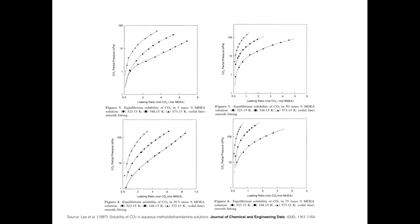These figures are taken from the article 'Solubility of Carbon Dioxide in Aqueous MDEA Solutions' from the Journal of Chemical Engineering Data. It shows four panels with three plots in each panel. The circle marker is at 323.15 K, the square marker at 348.15 K, and the triangle marker at 373.15 K, showing the effect of temperature on the solvent's capability to dissolve CO₂. The four panels differ in MDEA concentration: figure three is 5 mass percent, figure four is 20.5 mass percent, figure five is 50 mass percent, and figure six is 75 mass percent.